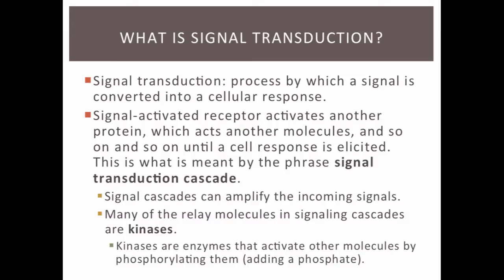Signal transduction typically involves the activation of a protein receptor when the ligand binds to it. The activated receptor protein then activates other molecules, which then activate other molecules, like a chain reaction, until a particular cell response is elicited or caused. This is called a signal transduction cascade.